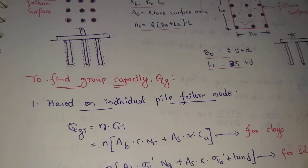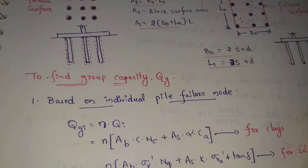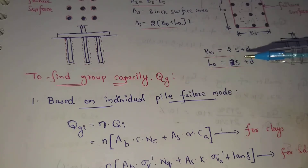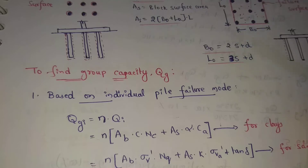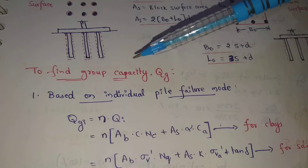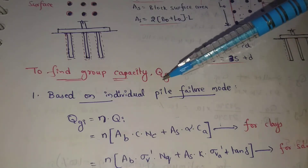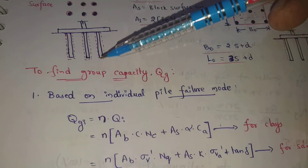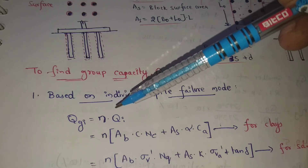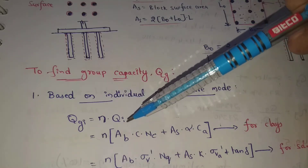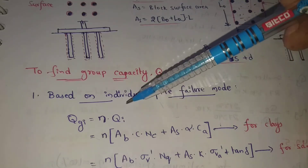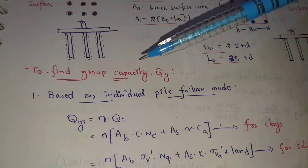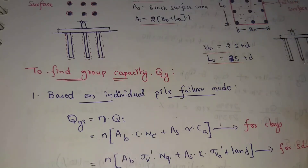Next, to find group capacity Qg. Group capacity is found based on individual pile failure mode first. Group capacity Qgi equals n into Qi, where n is the number of piles and Qi is the individual pile capacity — already discussed in the previous class.